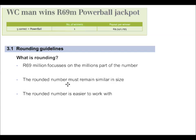Western Cape Man wins 69 million in a Powerball jackpot. You can see that the author of this headline has chosen to use decimal commas as a thousand separator.